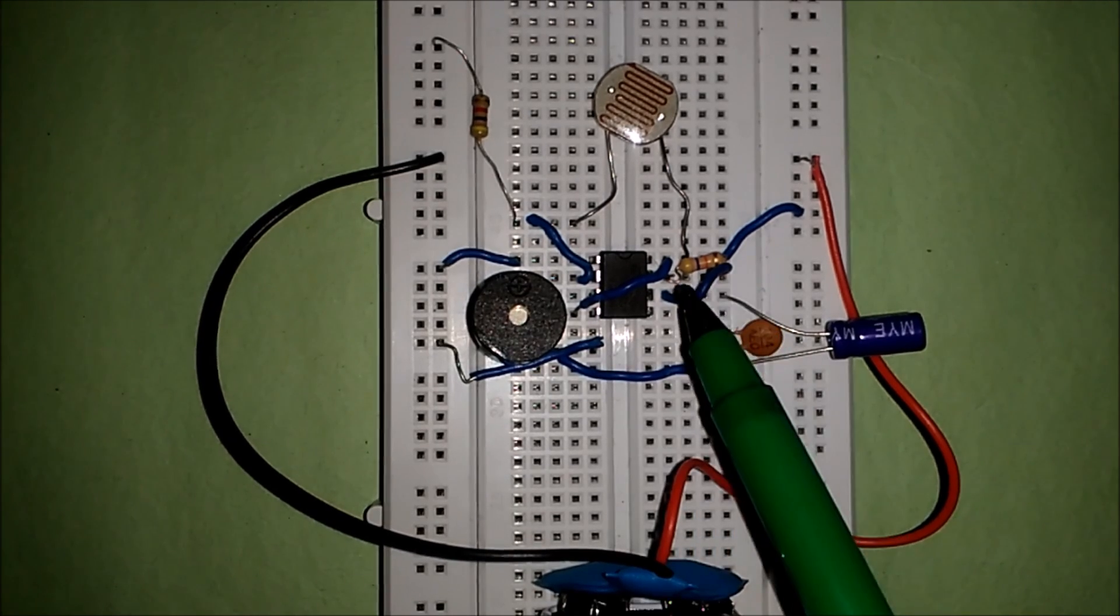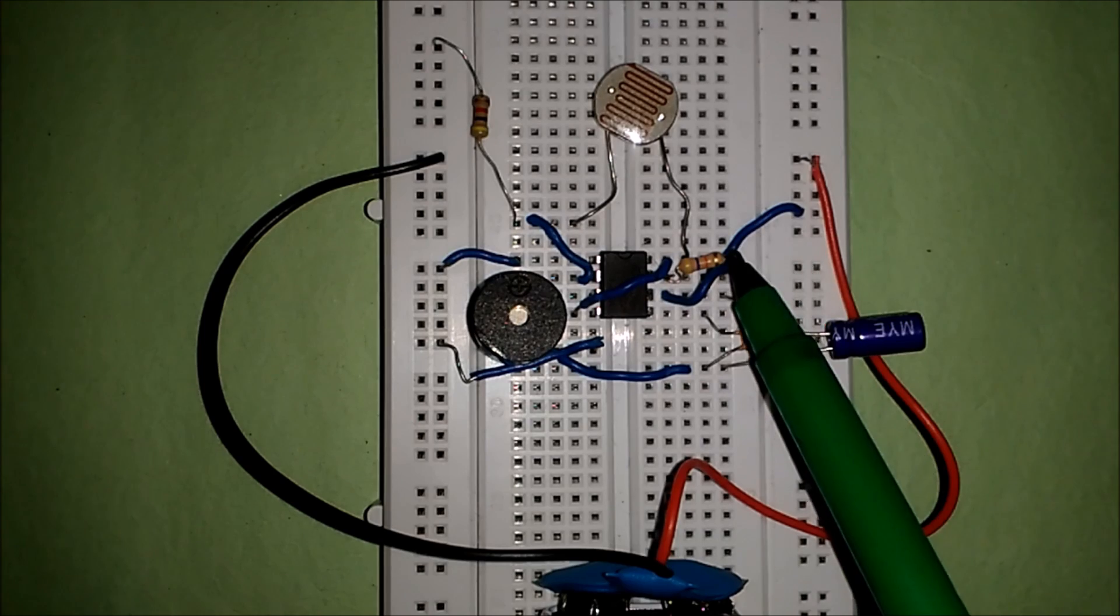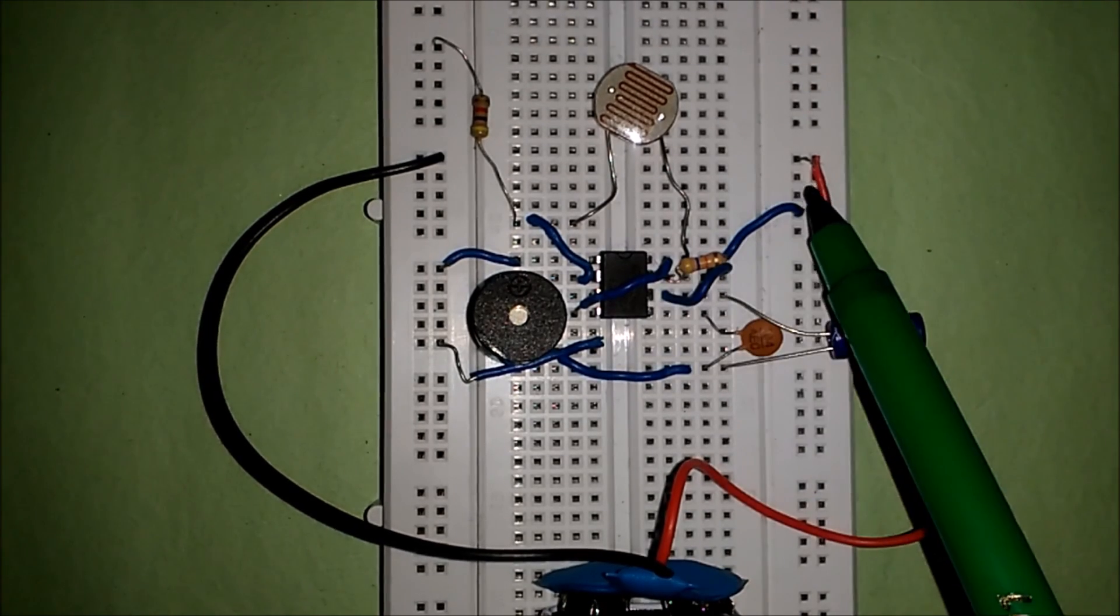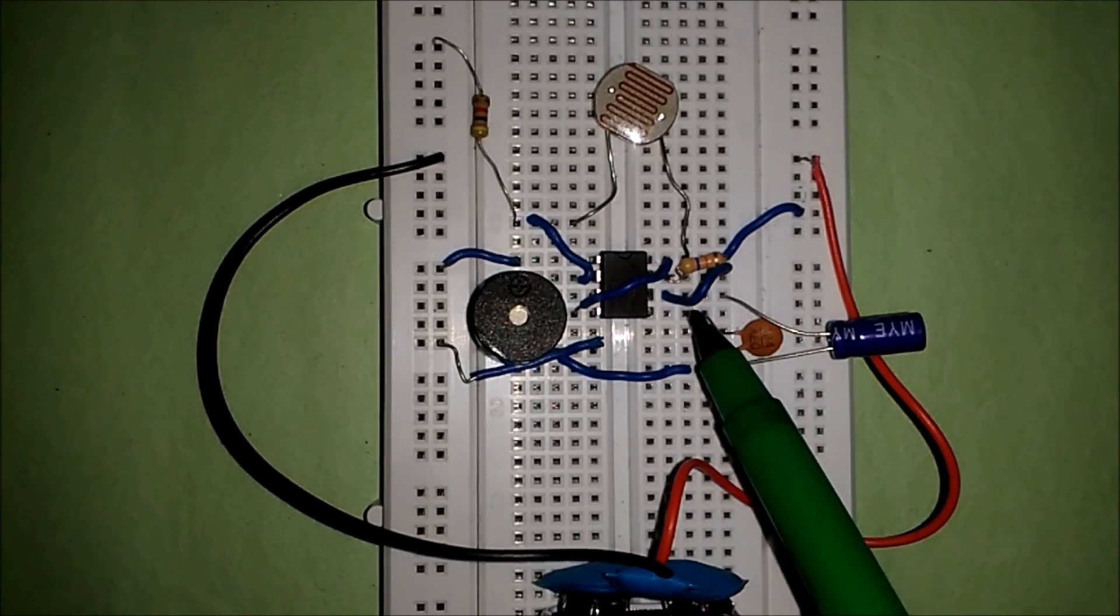Now, first of all, this 47k resistor is connected between Discharge, that is pin 7, and Positive Supply. Pin 8 is directly connected to Positive Supply as it is a VCC pin.